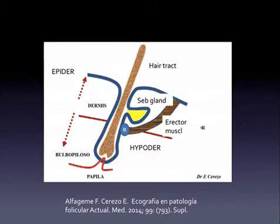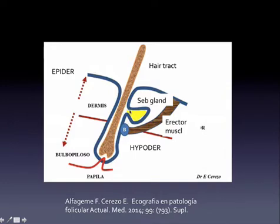I would like to review the anatomy of the hair. You can distinguish two important parts: the hair follicle, where the hair tract is born, and the hair tract itself. Associated with the hair follicle, we have the sebaceous gland, which is relevant in acne pathology, and the erectile muscle of the hair, which is important because tumors of this muscle have implications for the physiopathology of some hair diseases.